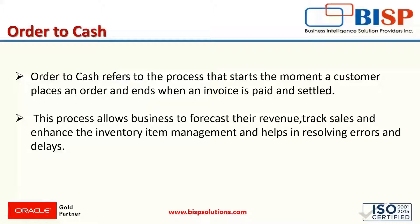Order to cash refers to the process that starts the moment a customer places an order and ends when an invoice is paid and settled out. We can say that the order to cash covers all the activities conducted from the time the company receives an order from the customer till the time cash is received against that order. This process allows businesses to forecast revenue, track sales, enhance inventory management, and help in resolving errors and delays and taking proper decisions.